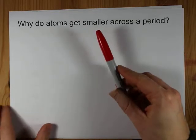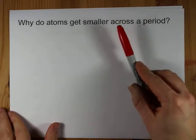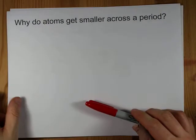Why do atoms get smaller as you go across, left to right, a period on the periodic table?